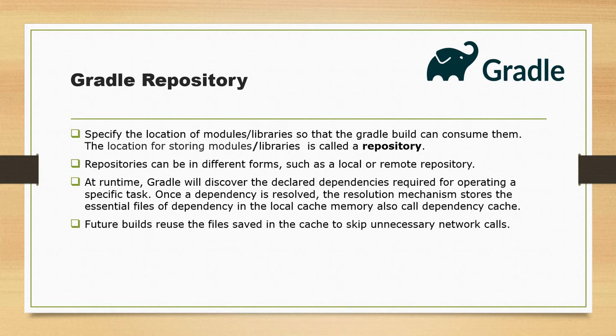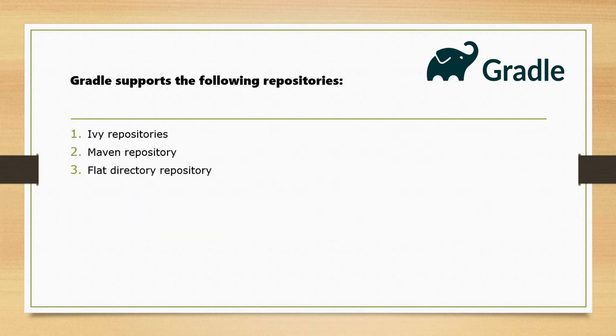A repository can be a local directory or a remote repository. At runtime, Gradle will discover the declared dependencies required for operating a specific task. Once a dependency is resolved, the resolution mechanism stores the essential files of the dependency in the local cache memory, also called the dependency cache. Future builds reuse the files saved in the cache to avoid unnecessary network calls in Gradle.